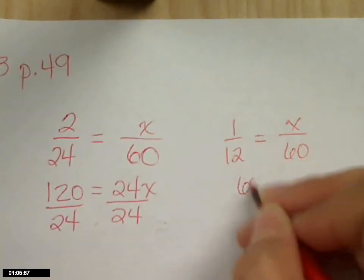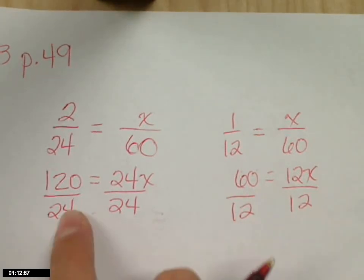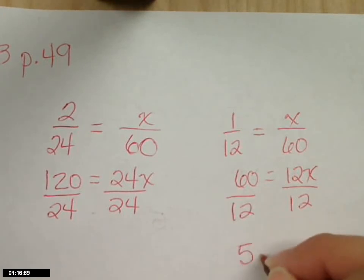Sixty times one is sixty. Twelve times x is twelve x. Then we can divide by twelve. And that's easier to look at than this over here. So twelve goes into sixty five times. So my answer is five, but five what?